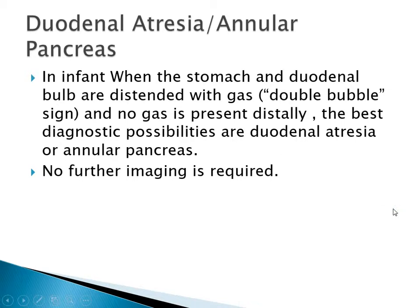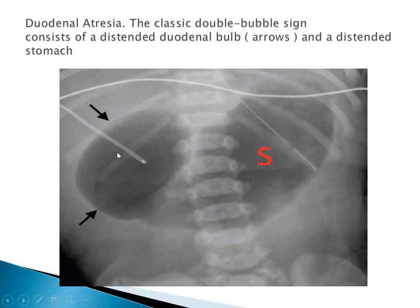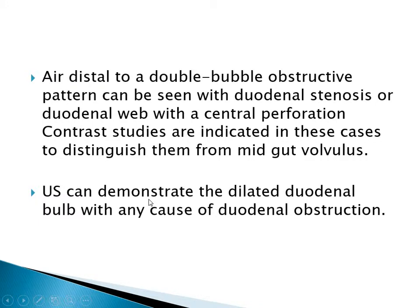If we have a double bubble sign, we have two possible diagnoses: annular pancreas or duodenal atresia, and the vast majority of the time it will be duodenal atresia. In this case of duodenal atresia, we see the classic double bubble sign of the stomach and duodenum. A distal-to-double-bubble obstructive pattern can be seen with duodenal stenosis or duodenal web with central perforation. Contrast studies are indicated in these cases to distinguish them from midgut volvulus.